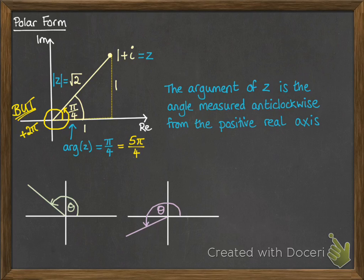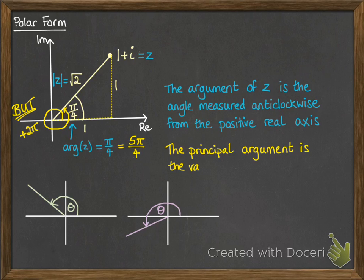for example, on this one, if you did another 2 pi around, you'd get the argument of z could also be 5 pi by 4. So we talk about the principle argument, and that means the value of theta between minus pi and pi. So in this case, on the blue one there, the pi by 4 would be our principle argument.